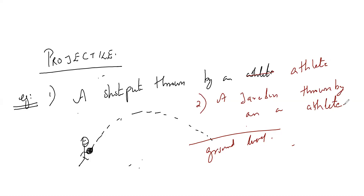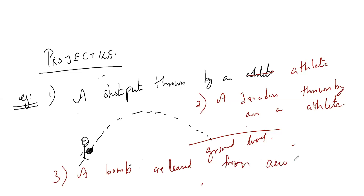The most important application of projectile motion was calculated for atom bombs — I think everyone has heard about the Hiroshima and Nagasaki thing. When deciding where a bomb should fall, especially for nuclear weapons and missiles, we use projectile motion. Third example: a bomb released from an aeroplane in level flight.